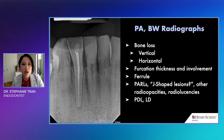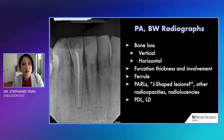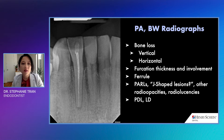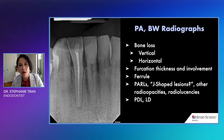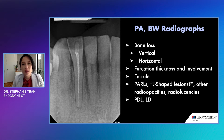We want to take a look at the furcations of teeth that have multiple roots as well as what kind of restorative issues there may be going on with the tooth, such as if there's caries, bone loss, tooth structure loss, ferrule issues, and if there are any lesions associated with the tooth — especially J-shaped lesions, radiopacities, and radiolucencies — and then if there are any PDL or lamina dura issues surrounding the tooth that may be associated with a radiolucency.